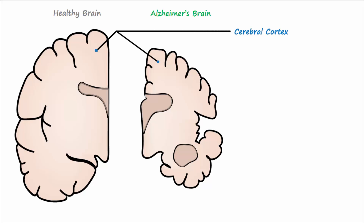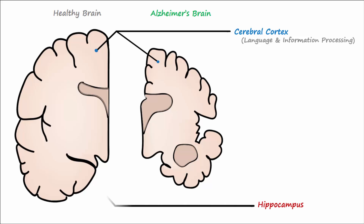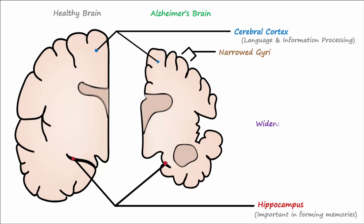An Alzheimer-affected brain shows atrophy of the cerebral cortex, which is the brain region responsible for language and processing information, as well as atrophy of the hippocampus, which is important in the formation of new memories. The gyri are narrowed and sulci are widened, and additionally, cerebrospinal fluid-filled ventricles expand.